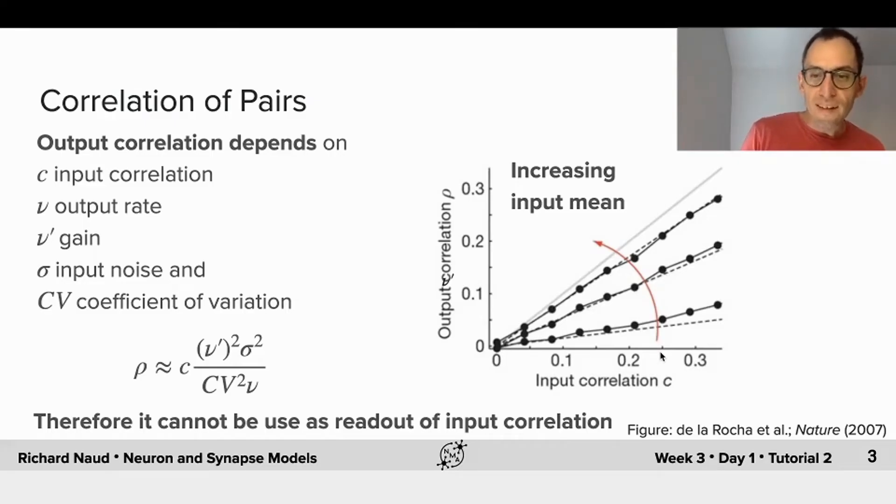We see that if you increase the input mean, so if you increase the current I which increases the average firing rate, you see that the slope of this relationship changes.